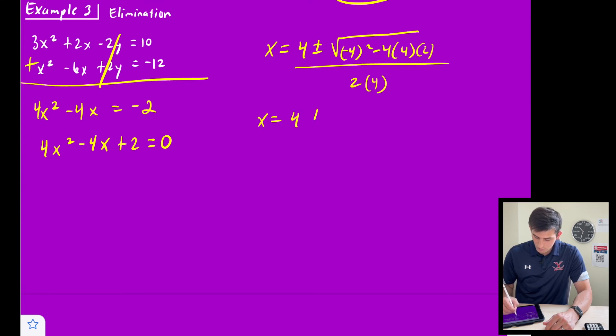So we get x = 4 ± √(16 - 32) divided by 8. So we get x = (4 ± √(-16))/8.